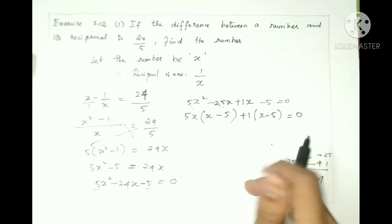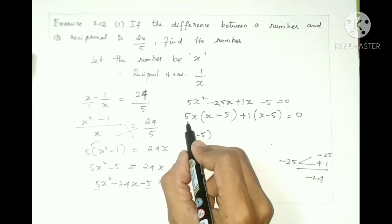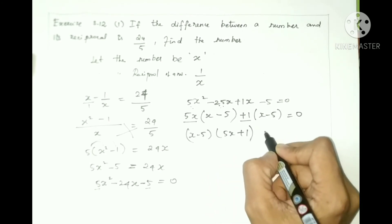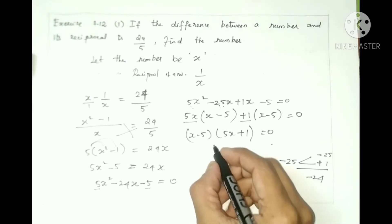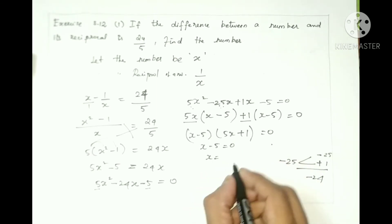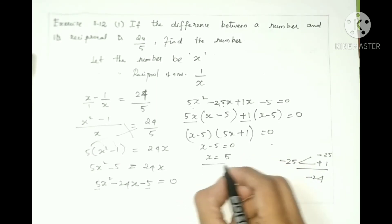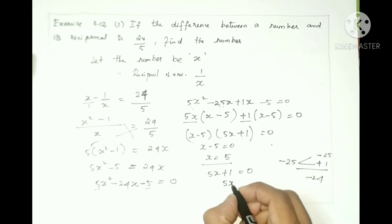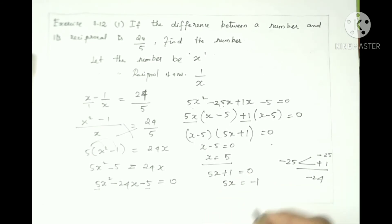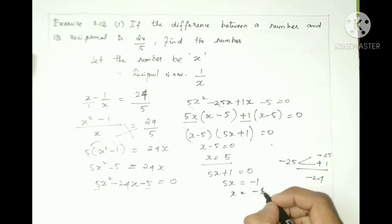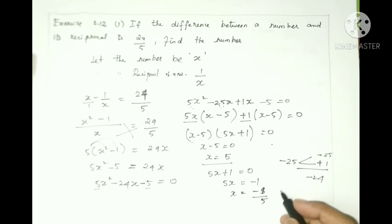From the remaining terms, 1 is common, giving plus 1(x minus 5). So the common factor is (x minus 5). Therefore: (x minus 5)(5x plus 1) equals 0. So x minus 5 equals 0, giving x equals 5. Or 5x plus 1 equals 0, giving x equals minus 1 by 5.